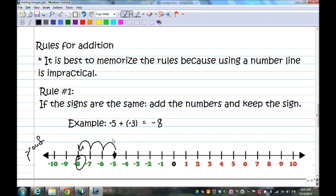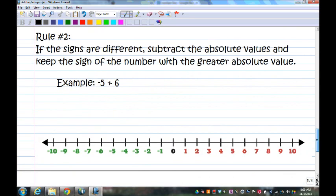Now, the next rule is if the signs are different. So rule two, if the signs are different, subtract the absolute values. There's that term that we covered at the beginning, right? You knew we needed it for something, and this is why. Subtract the absolute values and keep the sign of the number with the greater absolute value.